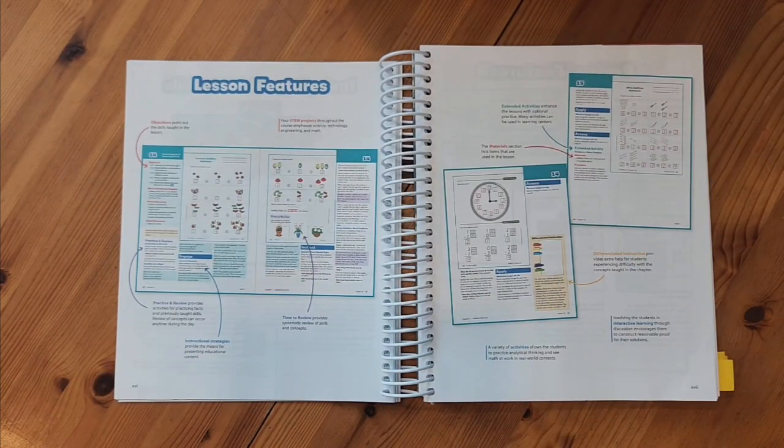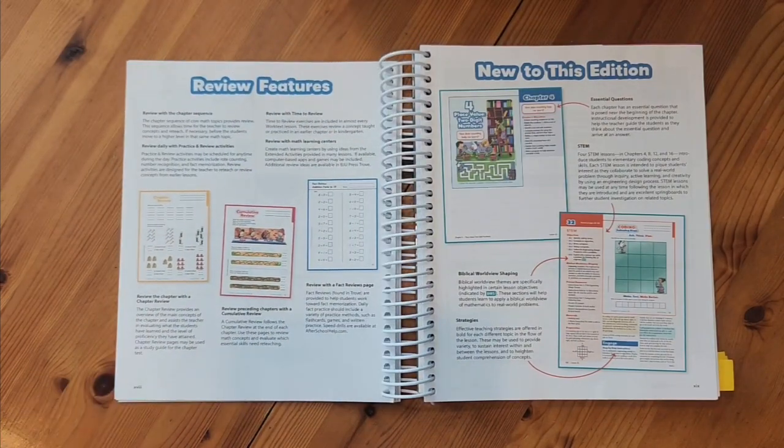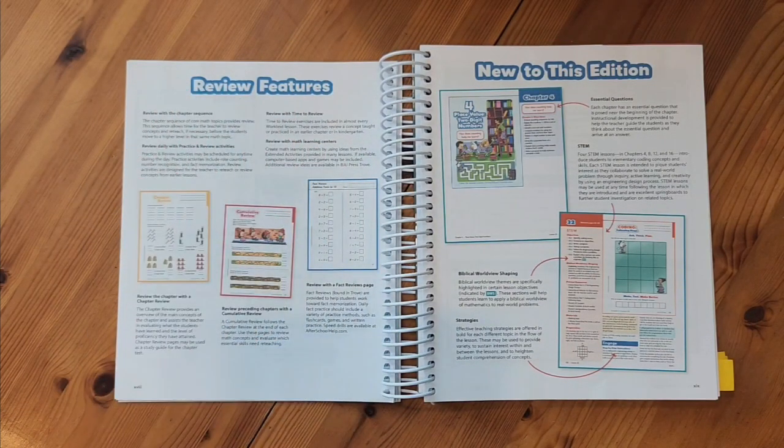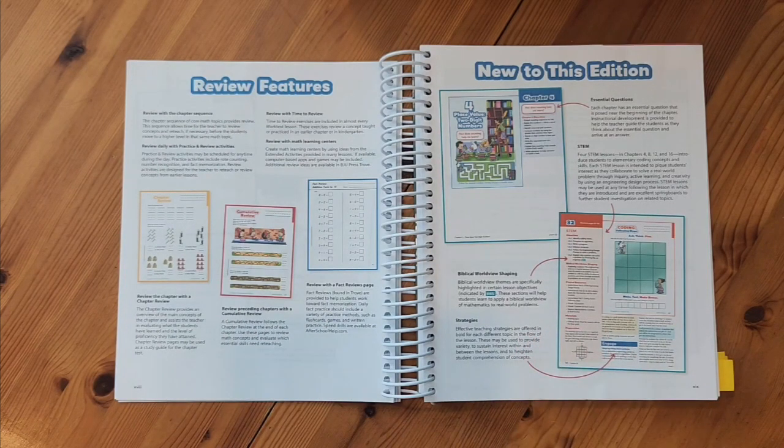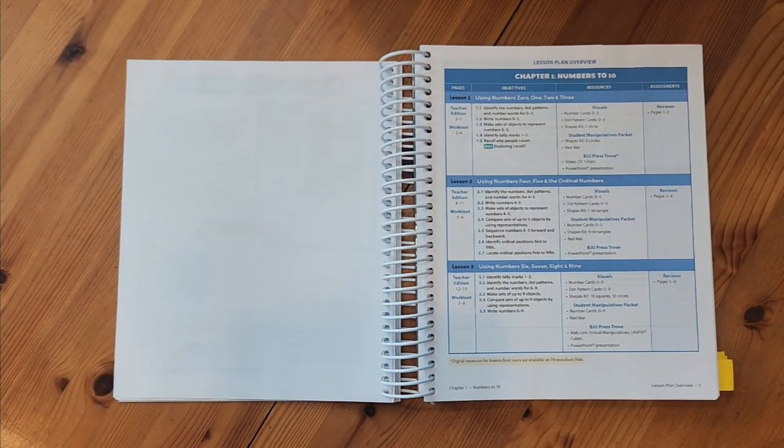The next couple pages are going to talk about the lesson features. If you can't remember where something is laid out in this book, this is a great place to go to for a quick reminder of where to find that information. And these pages talk about what we do to review things within this course. And this also talks about what's new to this edition.